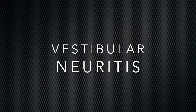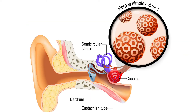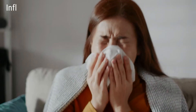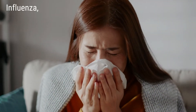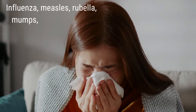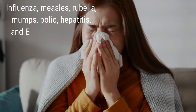First we'll cover vestibular neuritis. This condition is caused when a virus causes damage to the vestibular nerve. It's possibly a form of the herpes virus, which also causes cold sores, chicken pox, and shingles, but has also been found to be associated with influenza, measles, rubella, mumps, polio, hepatitis, and the Epstein-Barr viruses.